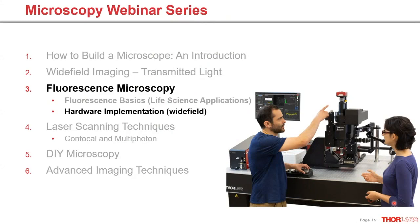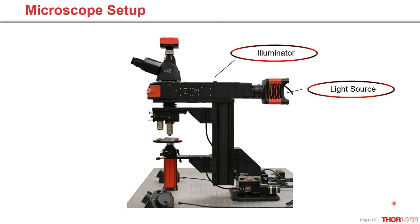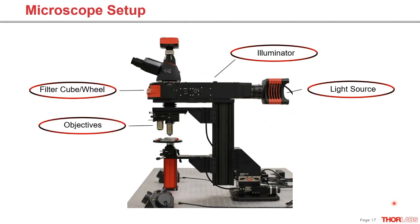Now that we've discussed the fluorescence basics and applications, let's move on to see what hardware makes those images. I'm showing here a microscope setup — one type, an upright microscope. The key components are the light source, balloon illuminator, filter wheel or filter cube, objectives, and detection. I will go through each of them in detail.